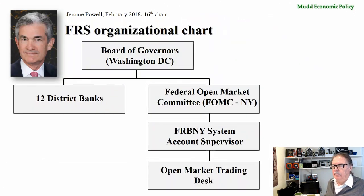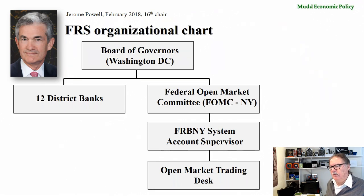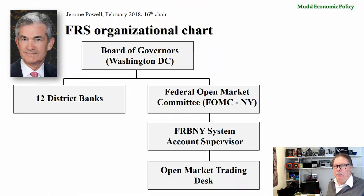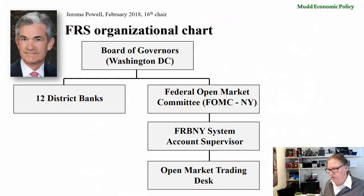The organizational chart starts with the Board of Governors at the very top, which manages the 12 district banks. If you're in California, we're in the San Francisco district. The part we care about is the Federal Open Market Committee in New York. That committee interprets the rules passed down by the Board of Governors, gives orders to the Federal Reserve Bank of New York system account supervisor, who instructs people to trade at the open market trading desk. To understand anything about the Federal Reserve System, you have to understand their key primary tool: open market operations.